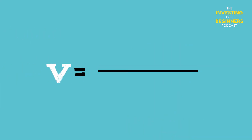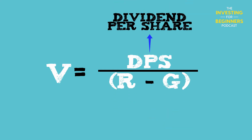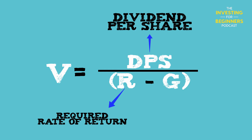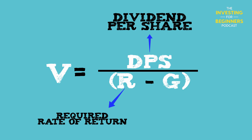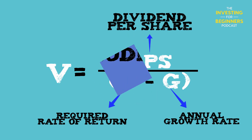The formula is as follows: V equals DPS divided by R minus G, where DPS, or dividend per share, is the expected dividend one year from now. R is the required rate of return for equity investors. G is the annual growth rate of the dividend forever. We'll go over all of these in depth and show you how to find these inputs and where to find the data to do these calculations. It is easy math — addition, division, and so on.